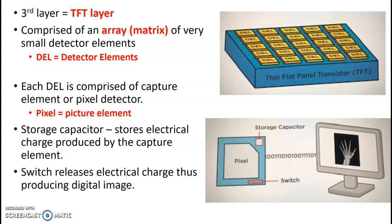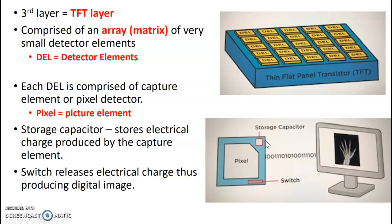The TFT layer is comprised of an array — also called a matrix — of small detector elements, abbreviated DEL, which stands for detector element. Each detector element is comprised of a picture element, which we call a pixel, arranged in an array. It also has a storage capacitor within each pixel that stores the electrical charge captured, and then a switch to release that electrical charge as binary numbers — either a zero or a one — which goes to your monitor screen and shows up as your image.